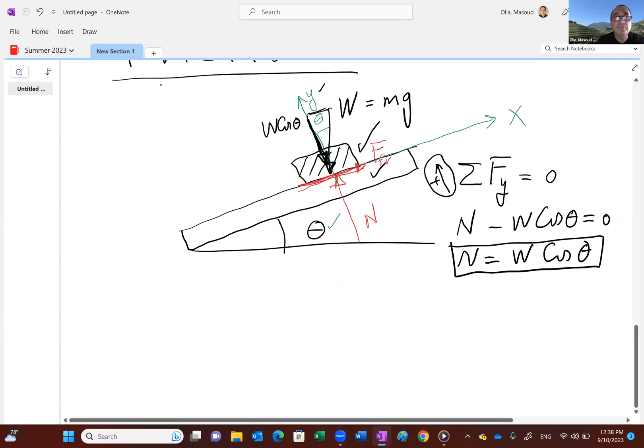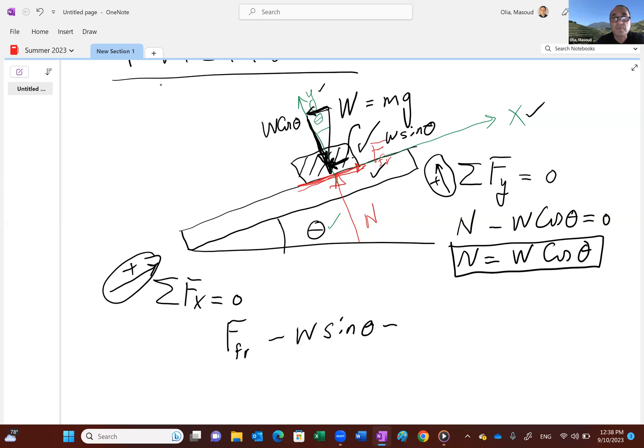Then balance forces in the x direction, and that should give us the friction. This is the x direction parallel to the surface. So we have friction, which is going in the positive direction according to my axis. And then what about this component of the weight? That would be clearly the w sine theta, right? That's going down. It would be in the negative direction. So friction force becomes w sine theta.